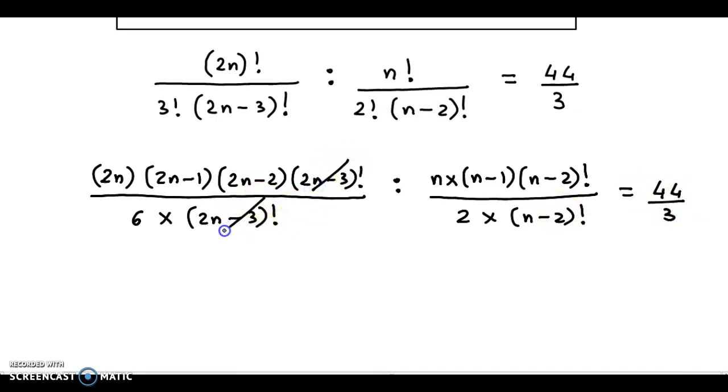Now (2n-3)! cancels out and (n-2)! also gets cancelled out. So what we have here is 2×n×(2n-1), now in this bracket we could take 2 as the common factor. So we have 2 times in brackets (n-1) divided by 6.